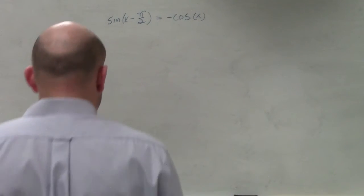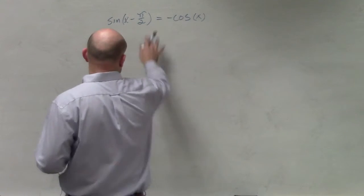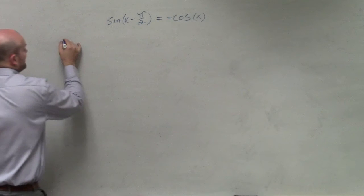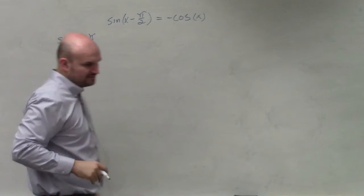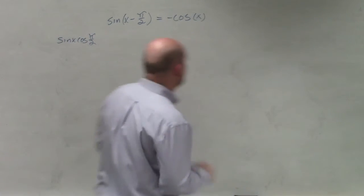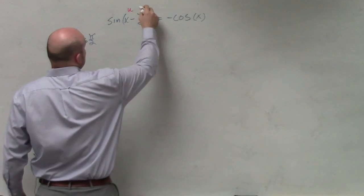By the formula, so if you guys look at this, obviously it's much easier to work on this side. So I would just say sine of x cosine of pi halves. Actually, first of all, what I would do first is identify this as u and my v.